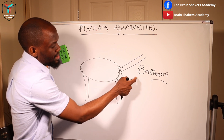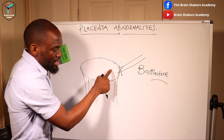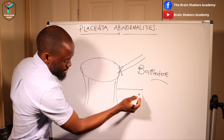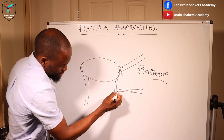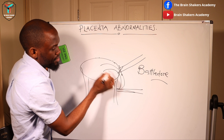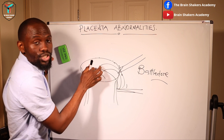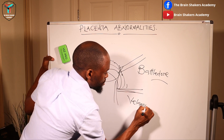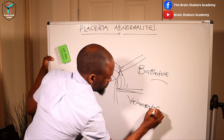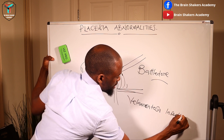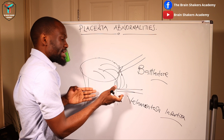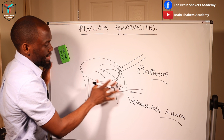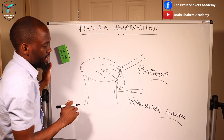There are also times when the cord is not inserted centrally, laterally, or on the margin as a battledore insertion, but is instead inserted into the membrane. The cord inserts into the membranes and blood vessels then emanate from that area going to the placenta. This is called a velamentous insertion — where the cord is actually inserting into the membranes. These are all abnormalities of cord insertion.